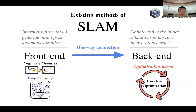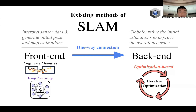Normally this is a one-way connection. Right now most researchers have found that the front end can use engineering features or learning-based methods, and learning-based methods have outperformed the traditional geometric method. But for the back end, we find that it is still optimization-based, or we call it iterative optimization.